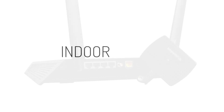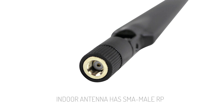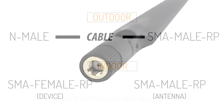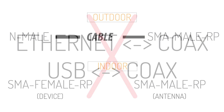For an indoor Wi-Fi antenna setup, make sure the indoor device — whether a USB adapter or router — has detachable antennas so you can swap on a bigger one. That bigger antenna will have an SMA male RP so it connects to the device's SMA female RP. In summary: for outdoor, your cable should be N-male to SMA male RP; for indoor, SMA female RP on the device connects directly to SMA male RP on the antenna.